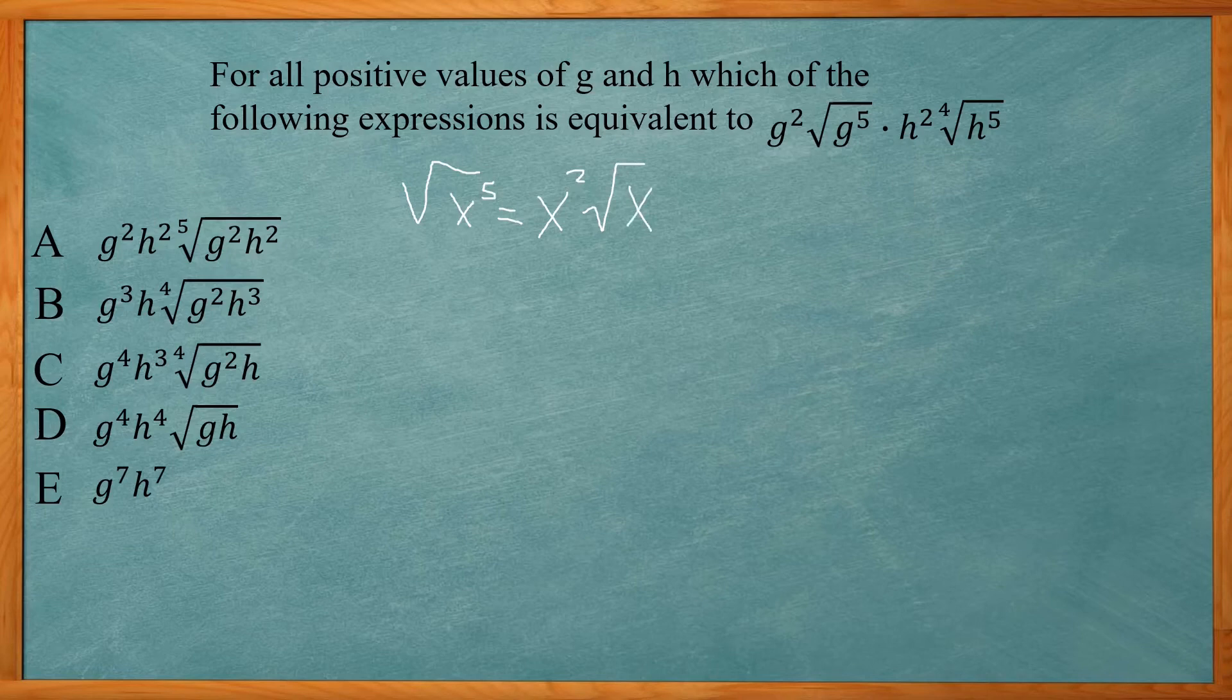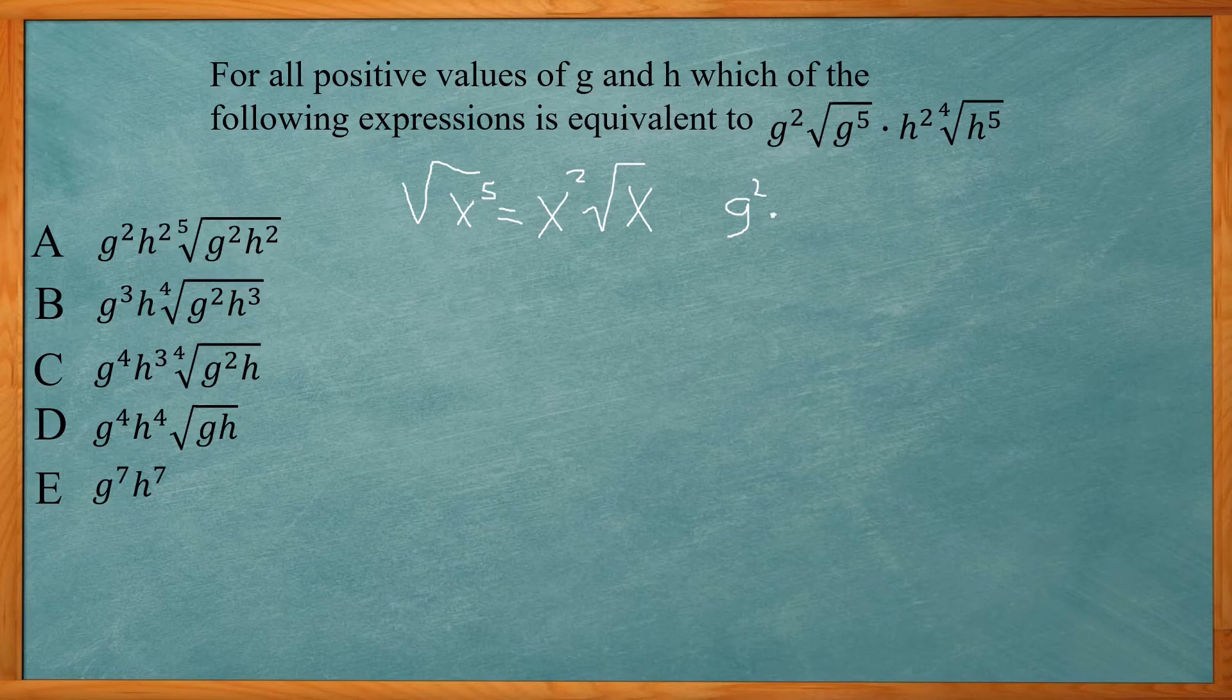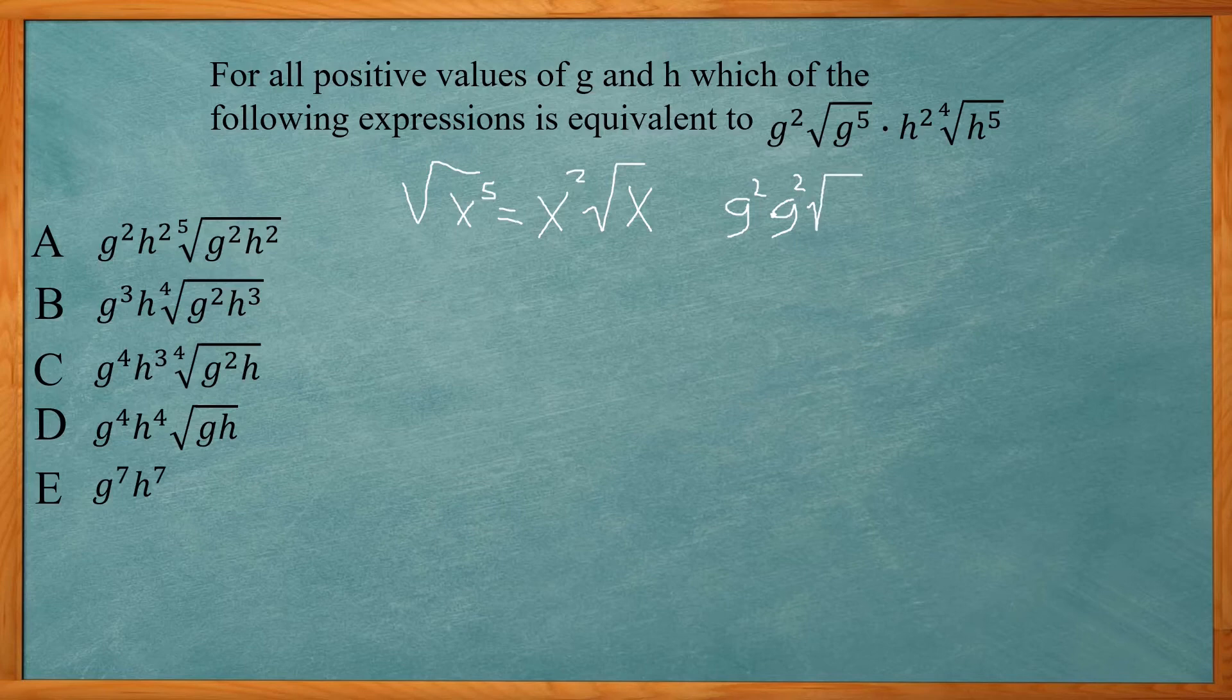So here we have g to the fifth, so it's going to be the same thing. I'm going to bring down the g squared. And when I take the square root of g to the fifth, that gives me another g squared, square root of g.